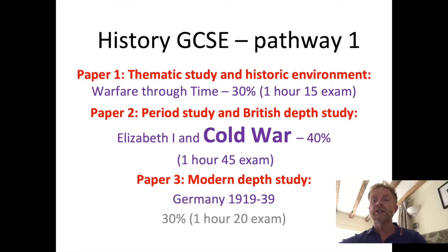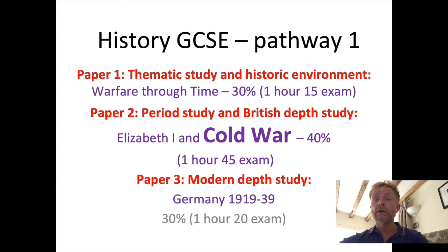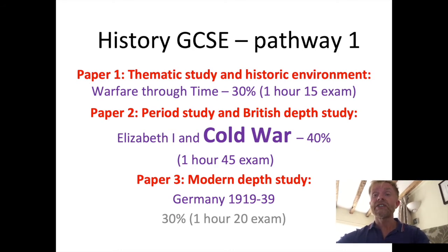I'm talking about a PowerPoint which I'm going to send with this, and it contains a number of slides. My first slide is about what the GCSE is all about — you've got four components to your exam. The first component is Paper 1, a thematic study about the historic environment, looking at warfare and the Blitz. In the second paper you'll be looking at a period study covering Elizabeth I and the Cold War on the same exam paper. Your third paper is a modern depth study about Nazi Germany.